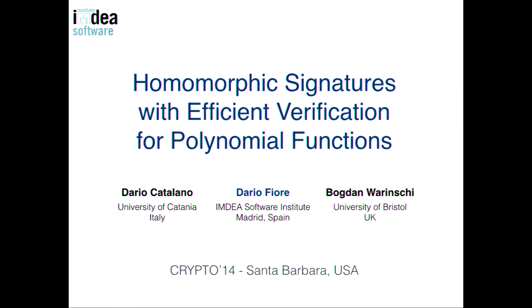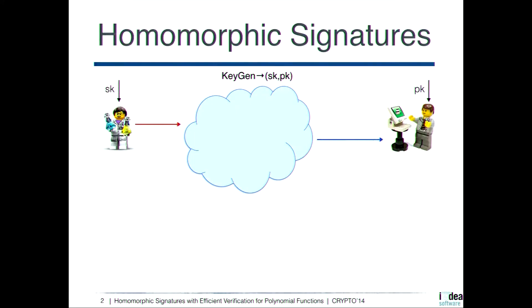I'll be talking about amorphous signatures. Let me start by defining what this primitive is. At a high level, amorphous signatures are like regular signature schemes, but in addition, they provide some controlled malleability mechanism.